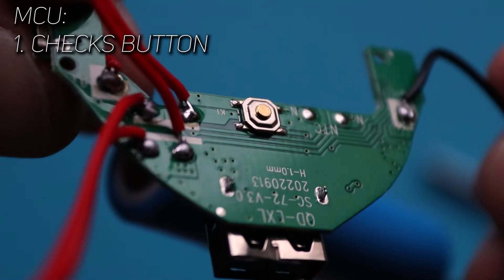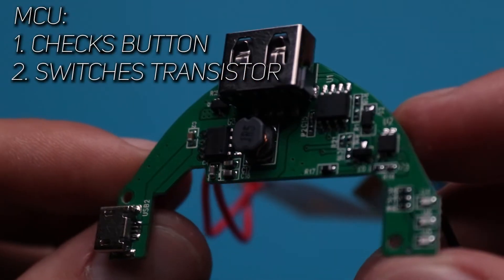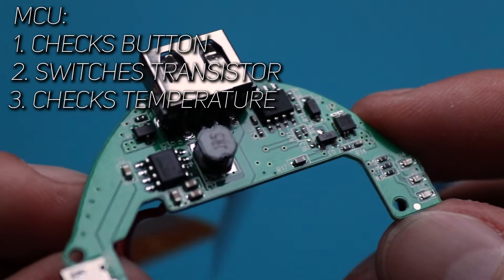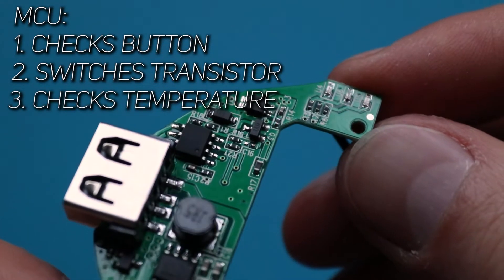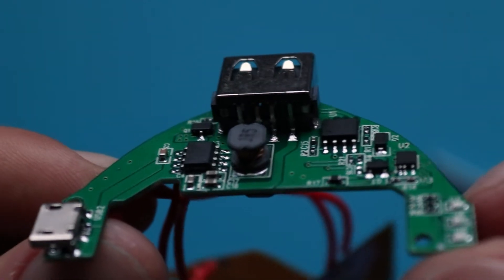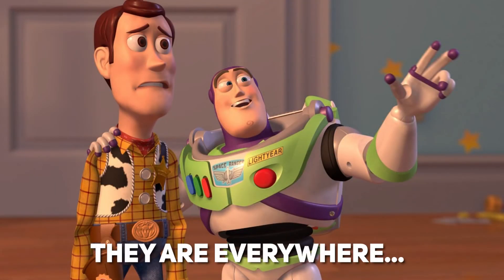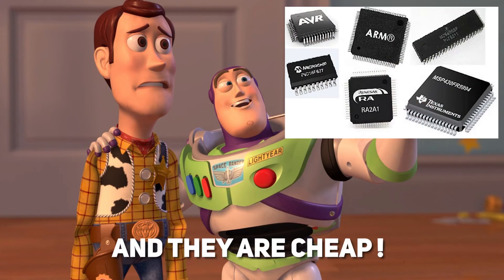But its job is really simple. It just checks when the button is pressed, flips this transistor on and off, which connects and disconnects heating elements to the battery. And it should check the heating element's temperature, ideally. But as we saw, the temperature sensor isn't there. So, according to my experience, microcontrollers are used nowadays everywhere due to their low price and high functionality for its price.